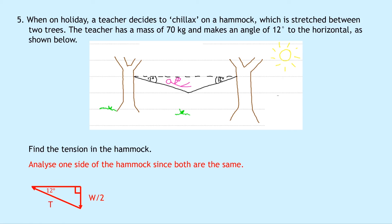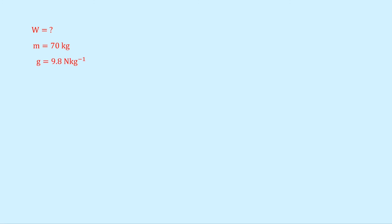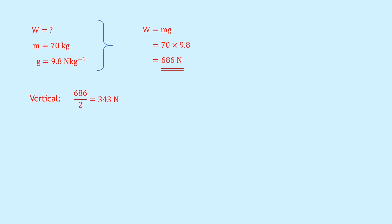We first calculate the weight, as this will help us find the vertical component. We know the mass is 70 kilograms and gravitational field strength is 9.8 newtons per kilogram on Earth. Writing down W equals Mg and substituting: 70 times 9.8 gives a weight of 686 newtons. The W over 2 vector downwards must be half this weight value, so 686 divided by 2 equals 343 newtons.